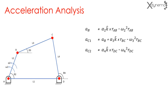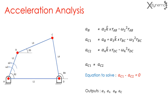Acceleration of point C equals AB plus alpha 3 times K cross RBC minus omega 3 squared RBC. Also, the acceleration of point C equals alpha 4 times K cross RDC minus omega 4 squared RDC. As AC1 and AC2 both represent the acceleration of point C, AC1 equals AC2. Therefore, solving AC1 minus AC2 equals 0 provides the values of angular accelerations alpha 3 and alpha 4. The outputs of acceleration analysis are alpha 3, alpha 4, AB, and AC.